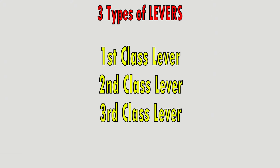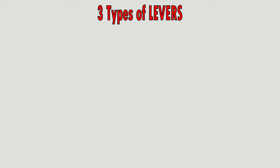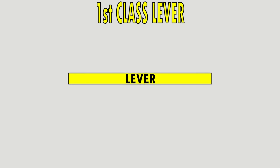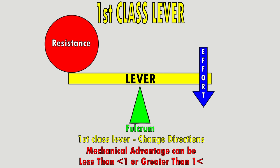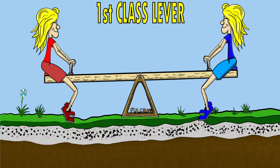There are three types of levers. The first class lever is set up with the fulcrum in the middle, with the effort and resistance on the sides. Its function is to change directions. The mechanical advantage can be less than or greater than one, determined by dividing the force arm by the resistance arm. A comparable real-world item would be the seesaw.